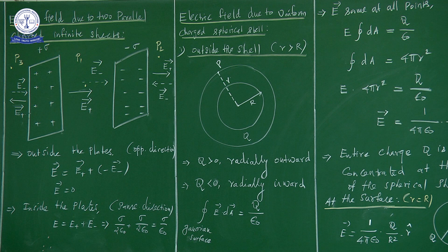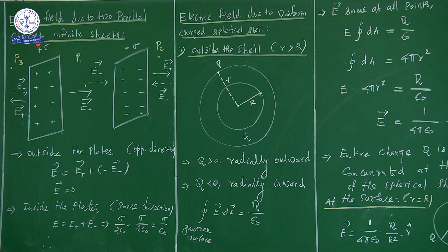This is the third application: electric field due to two parallel charged infinite plane sheets. Consider two parallel charged infinite plane sheets. One is positively charged and another plane sheet is negatively charged. Positive charge means surface charge density is plus sigma. Negative charge means surface charge density is minus sigma.